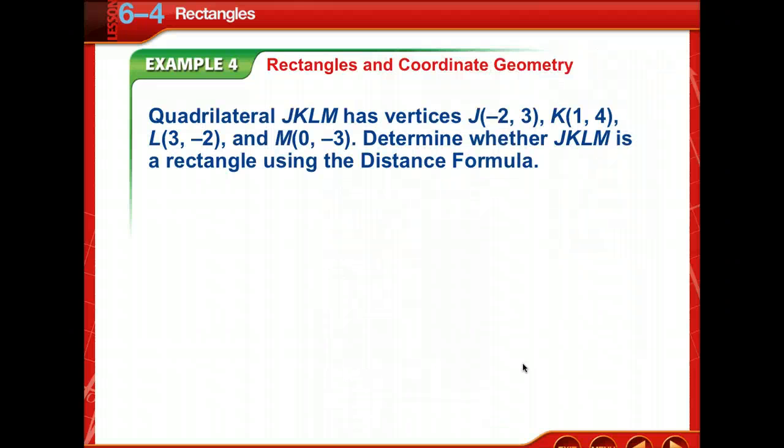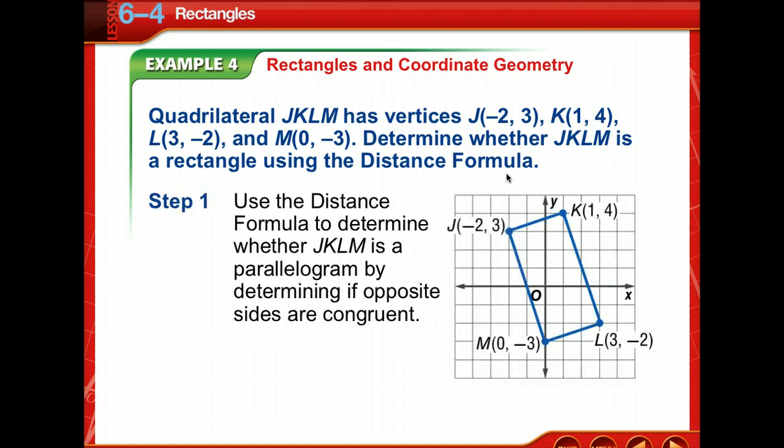Now let's look at rectangles and coordinate geometry. We're given quadrilateral JKLM and its vertices, and we need to determine whether JKLM is a rectangle using the distance formula. The first thing I do when working these problems is sketch it so I know which sides I'm comparing. I need to see if JK is congruent to ML and if KL is congruent to JM, then look at the diagonals.